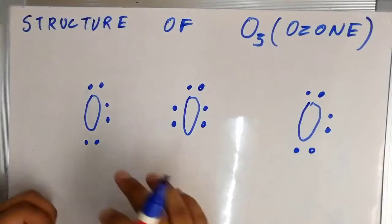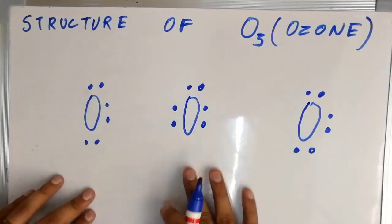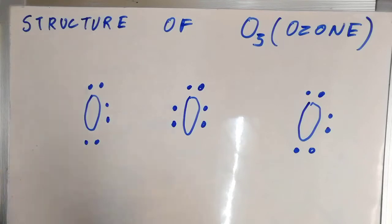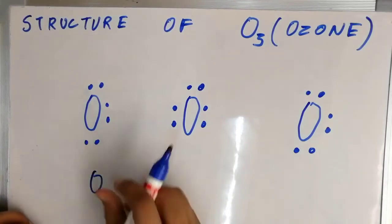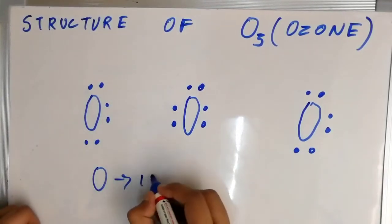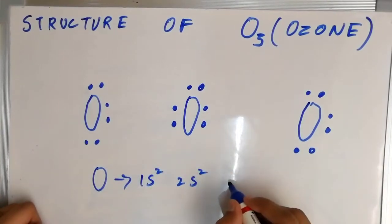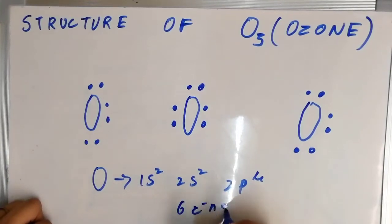So in order to gain stability each oxygen has to have eight electrons in its valence shell as you know. The electronic configuration of oxygen is 1s2 2s2 and 2p4. So the valence shell, the second shell, has four plus two, six electrons. Six electrons and it must gain plus two electrons.